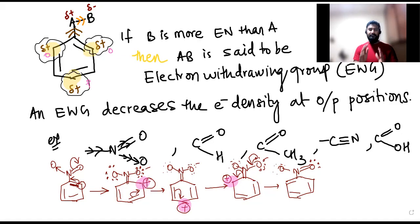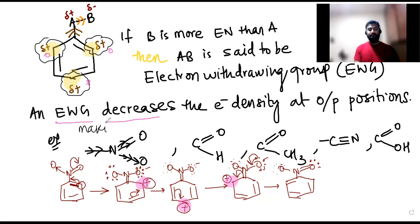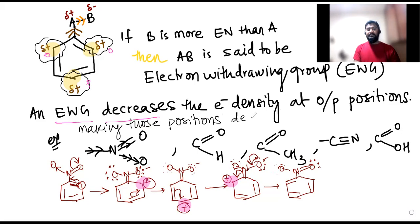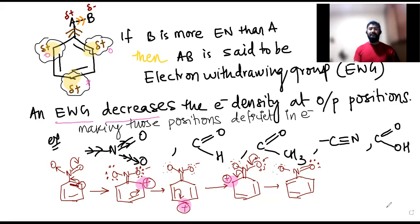So if an electron withdrawing group is attached, it pulls electrons from ortho and para positions, making them electron deficient. An electron withdrawing group decreases the electron density at ortho and para positions, making those positions deficit in electrons.